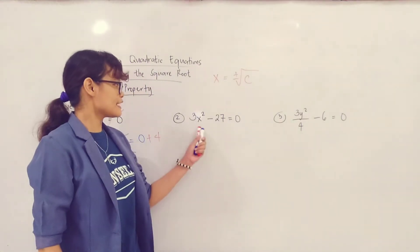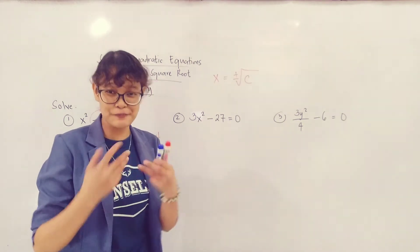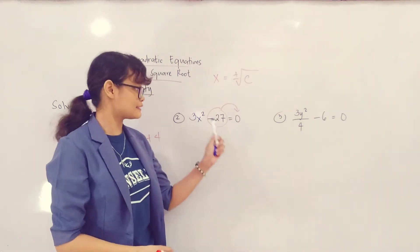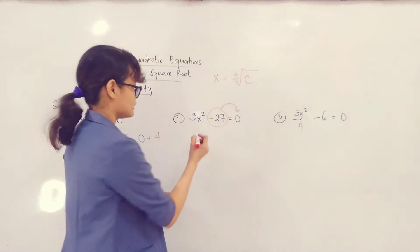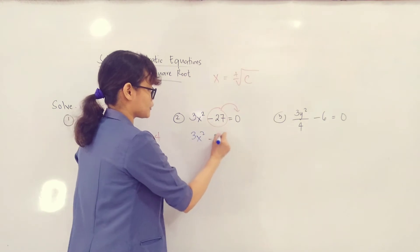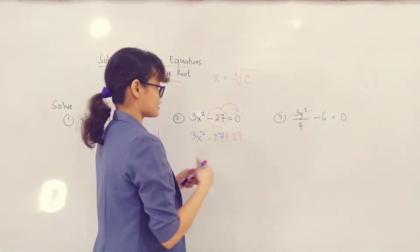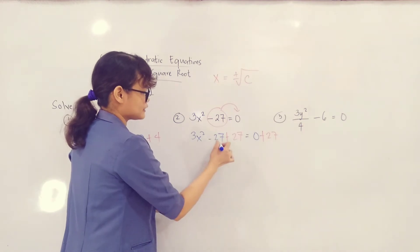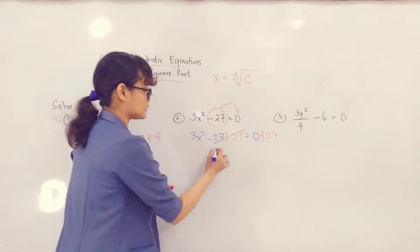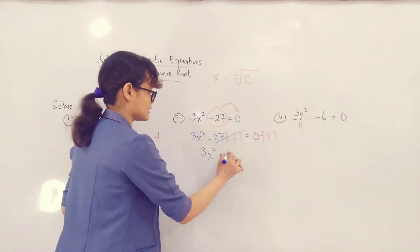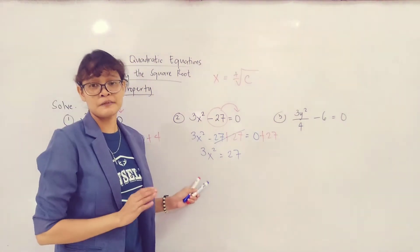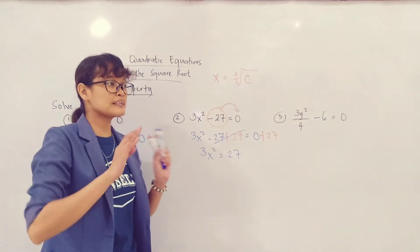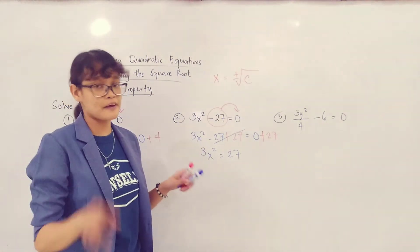So for example number 2, you have 3x squared minus 27 equal to 0. We know already the first step — kailangan natin ilipat si negative 27 sa kabilang side ng equation. Again, this is a negative number, so we are going to apply APE. You have 3x squared minus 27 plus 27 equal to 0 plus 27. And then after that, simplify. So negative 27 plus 27 is already equal to 0, so ang matitira na lang dito ay 3x squared equals to 27.